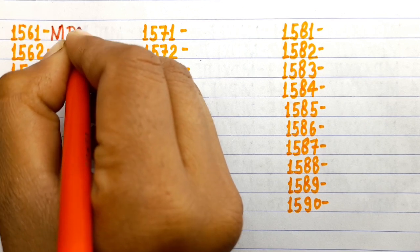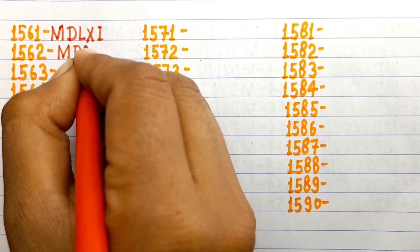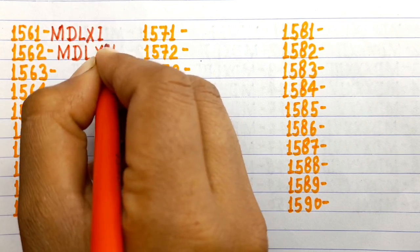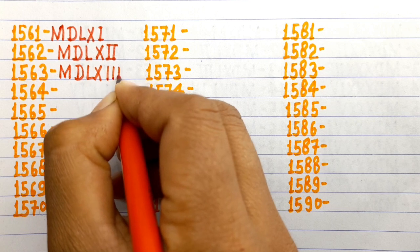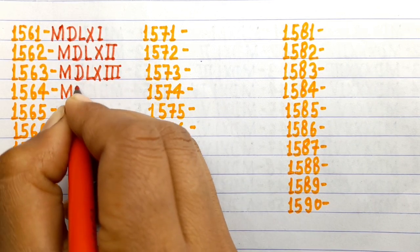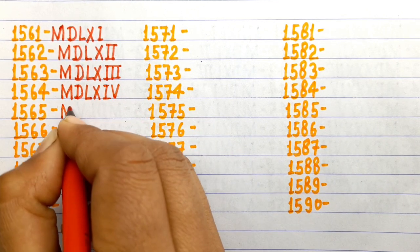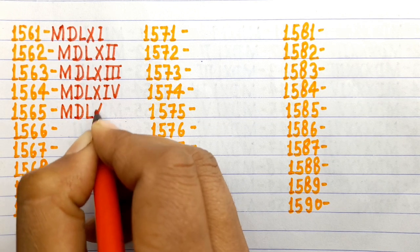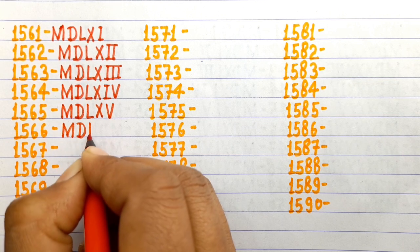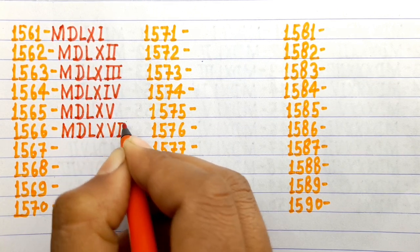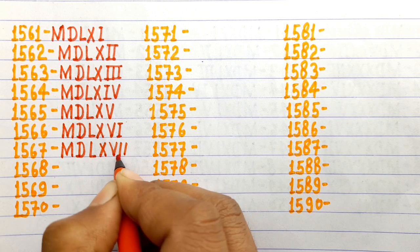1561 MDLXI, 1562 MDLXII, 1563 MDLXIII, 1564 MDLXIV, 1565 MDLXV, 1566 MDLXVI, 1567 MDLXVII.